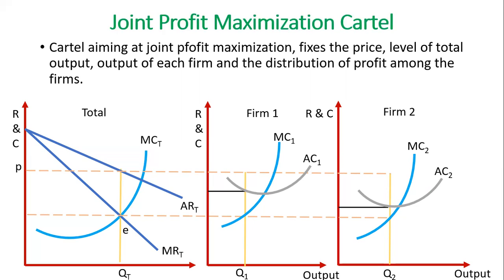In this example, if the cost per unit of both firms is different, then their profit may also be different.